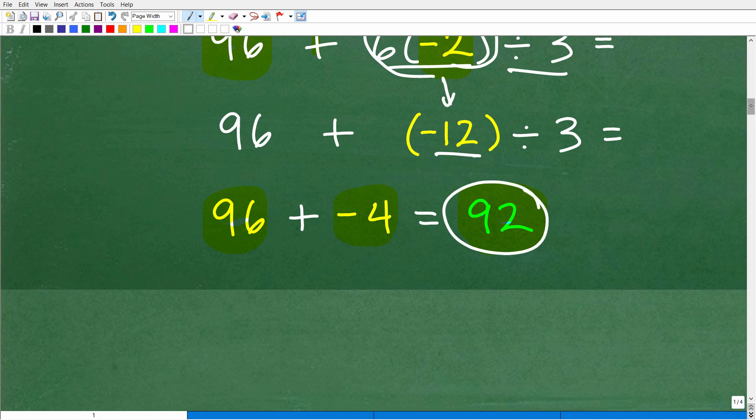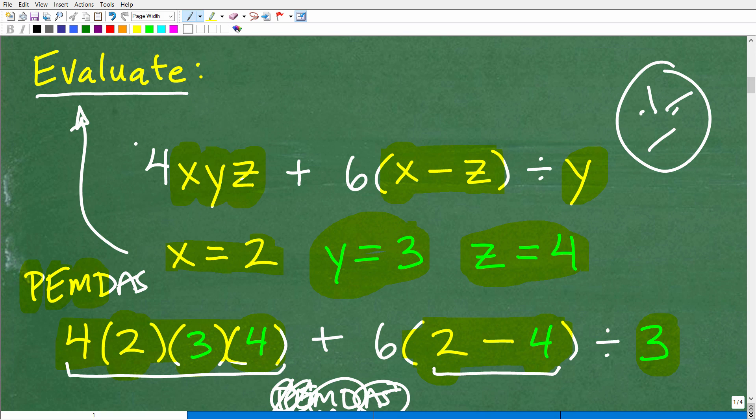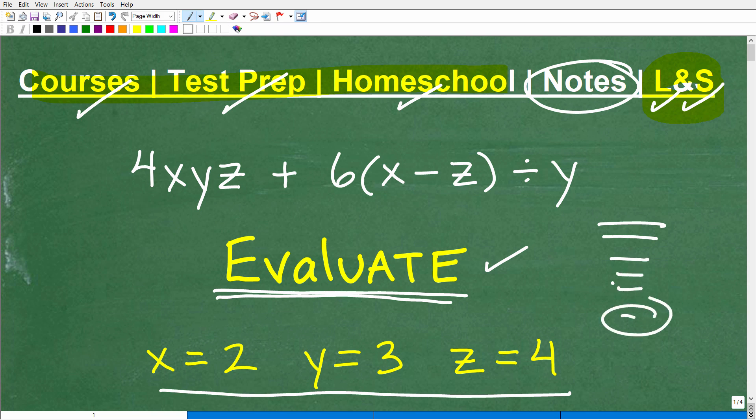So evaluating algebraic expressions is really taking an algebraic expression, something like this, you're replacing the variables with specific numbers. And then this just becomes one big order of operations problem. And if you're taking a course like pre-algebra, algebra one, you're going to be doing a ton of problems like this. So you need to know what this word means, obviously, but even more importantly, you need to know how to set these problems up correctly. When you plug in the values for the respective variables, double check and make sure you have everything set up correctly. And then you have to just one, no more than two steps when you're doing your work, your order of operations work to simplify and get your final answer.